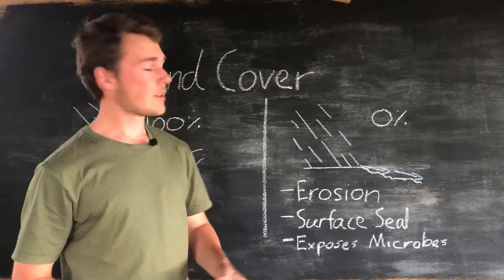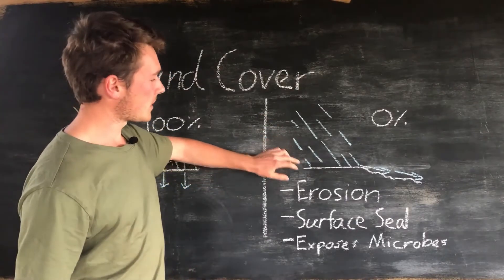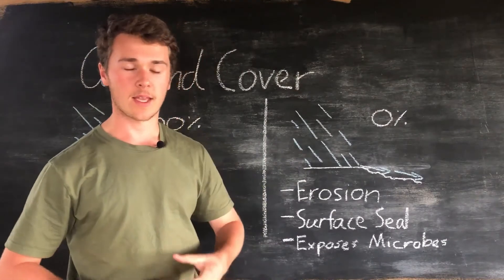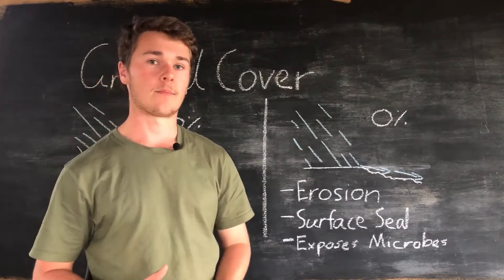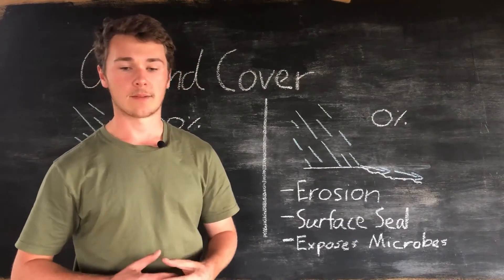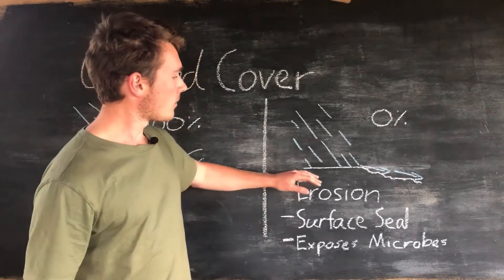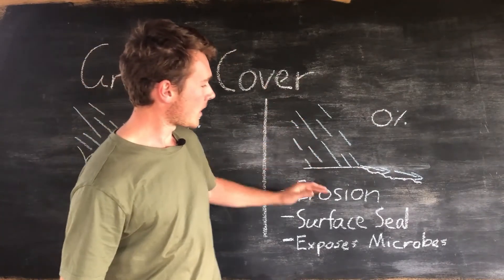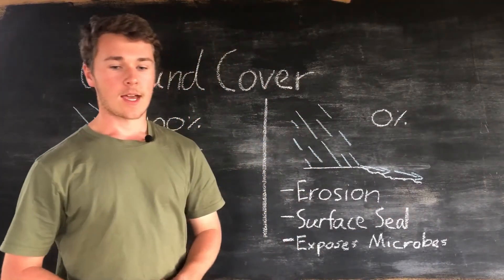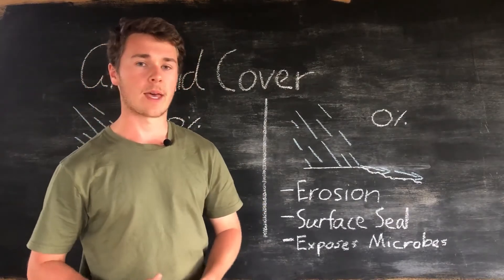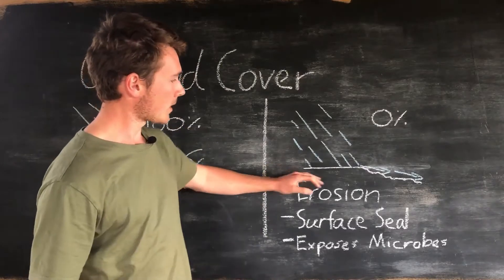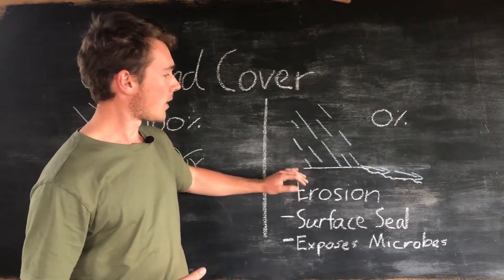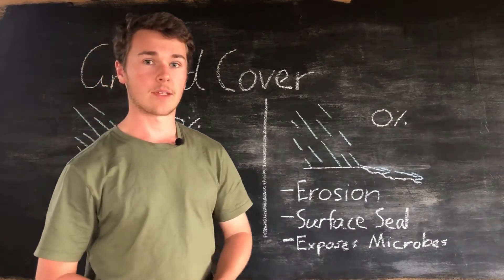Every time it rains, raindrops fall from the sky building up kinetic energy. When these raindrops hit bare soil — soil that doesn't have any ground cover — it transfers this kinetic energy into the soil, causing the soil structure to start breaking up, which exposes our soil particles and they can be dislodged. As a result, the soil particles become more transportable and can be washed away.